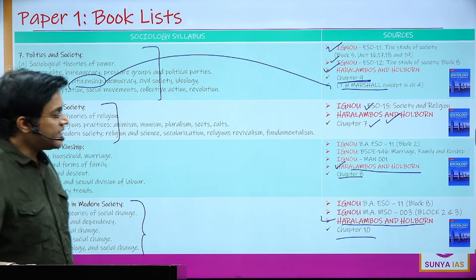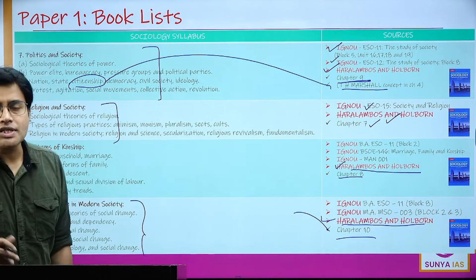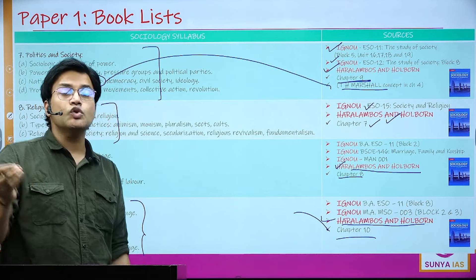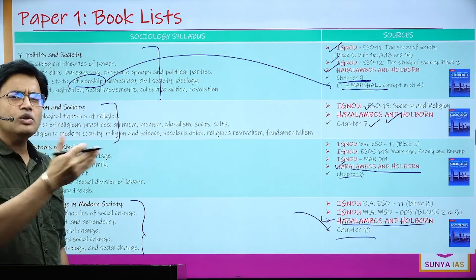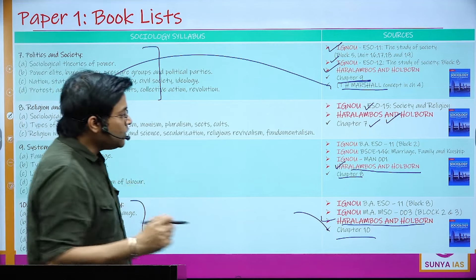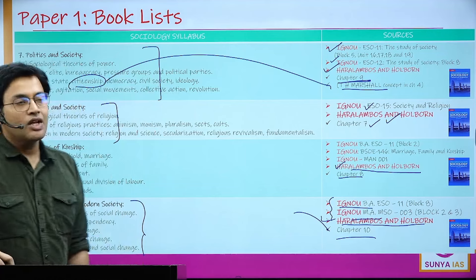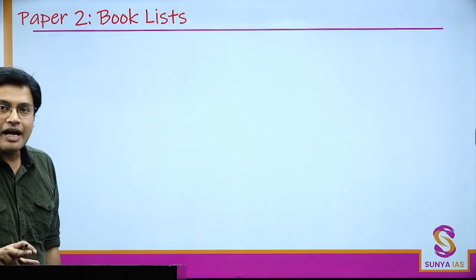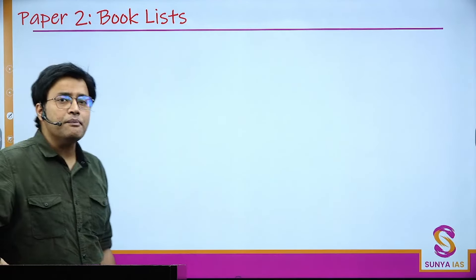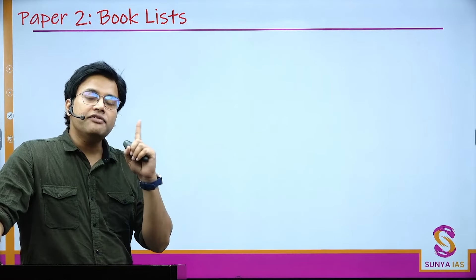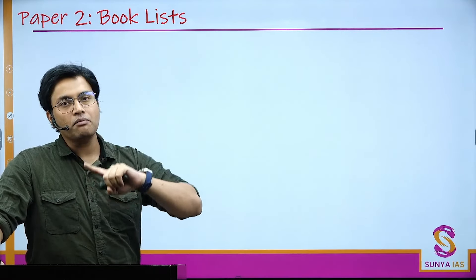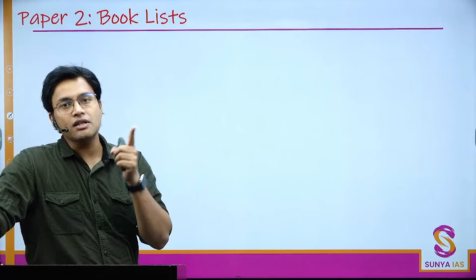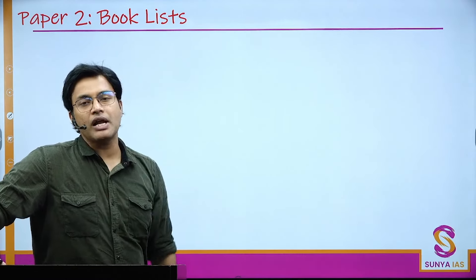Chapter 10 of Haralambos covers education and social change, including Pierre Bourdieu's concept of capital — social capital, economic capital, cultural capital — and the notion of habitus. Refer to the IGNOU material with specific codes mentioned. That covers the book list for Paper 1. For Paper 2, when I show you different books, it doesn't mean you read page one to the last page — you must be smart and integrate resources with the syllabus and the types of questions asked.